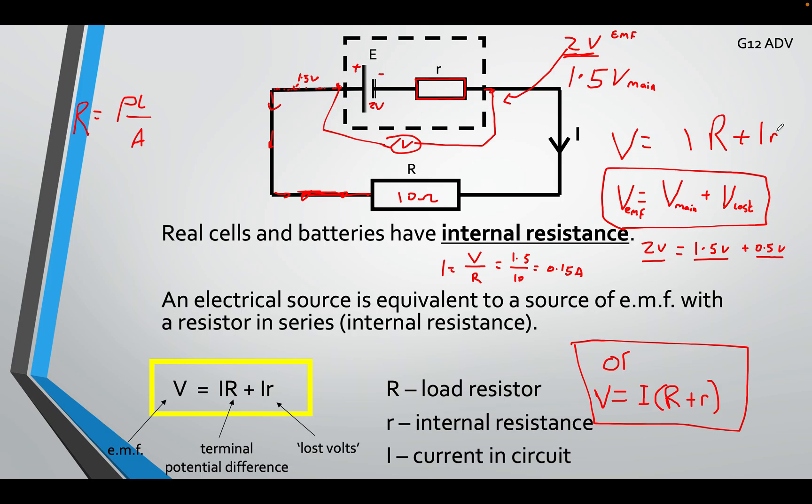V equals IR plus V equals I little r. If you know the current and you know the resistors, we can use this rule to find the EMF. We just add these two IRs. This times this plus this times this. Another way you can see it is you can treat this as a normal circuit. If I wanted to find V, I can just do IR.